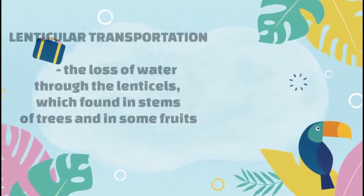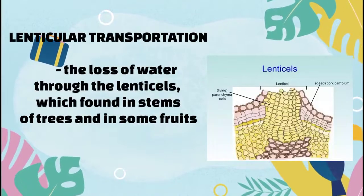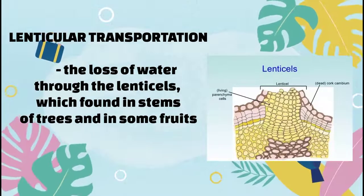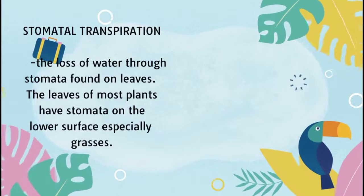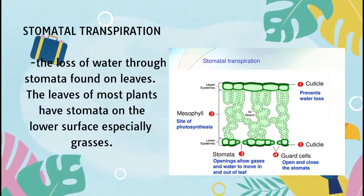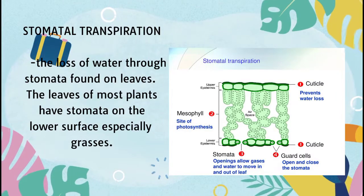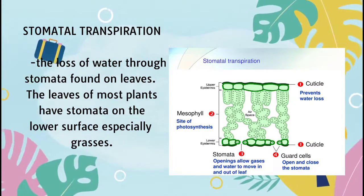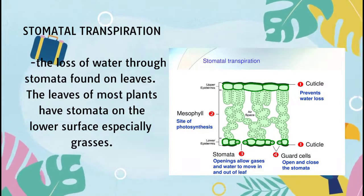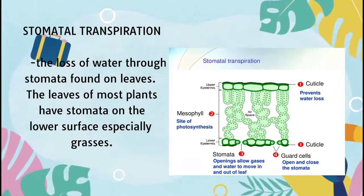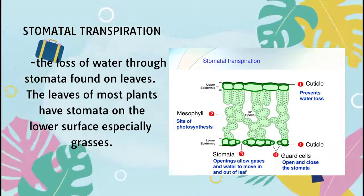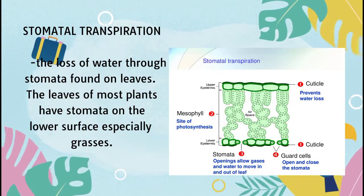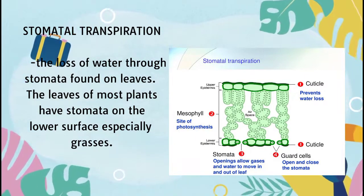Lenticular transpiration is the loss of water that takes place through lenticular cells which are found in stems and in some roots. Stomatal transpiration is the loss of water that takes place through stomata which are found on leaves. Most plants have stomata on the lower surface, although certain species, especially grasses, have them on both upper and lower surfaces. Stomatal transpiration can account for more than 90% of the water loss from plants.